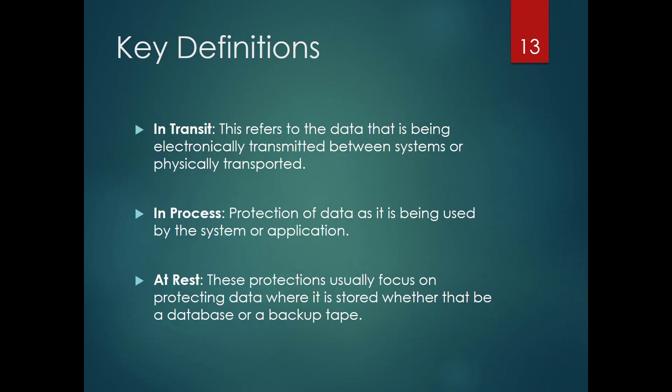When we look at those characteristics, we need to protect them in three different states. The first state is in transit — when information is being electronically moved between different systems. The second is in process — while it's being used by a particular system or application. And finally, at rest — typically when it's stored somewhere, such as on a hard drive, a backup tape, or a database. So confidentiality, integrity, availability, and accountability all need to be protected while information is in transit, in process, and at rest.